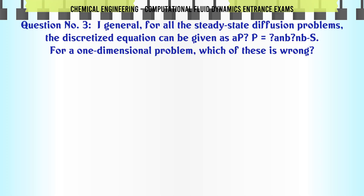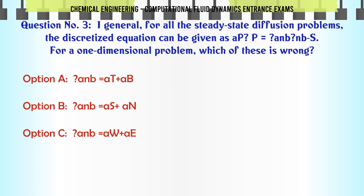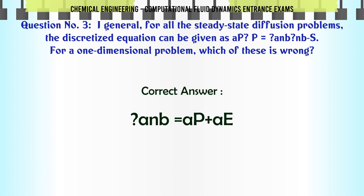In general, for all steady-state diffusion problems, the discretized equation can be given as a_P * phi_P = sum(a_nb * phi_nb) + S. For a one-dimensional problem, which of these is wrong? A. a_E = A. B. a_E = a_N. C. a_E = a_W raised to A. D. a_E = a_P = A. The correct answer is D: a_E = a_P = A.